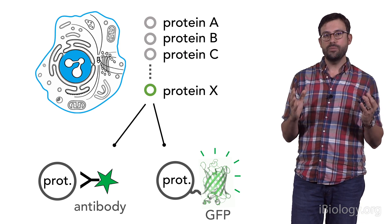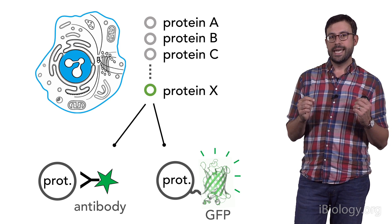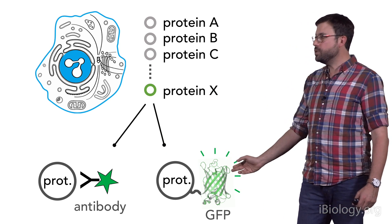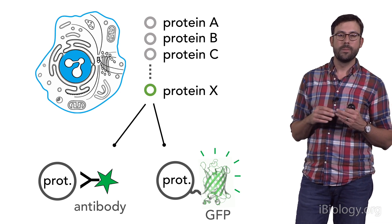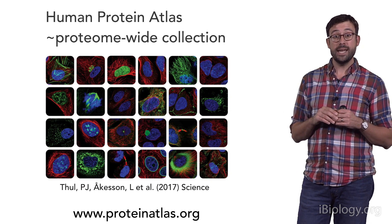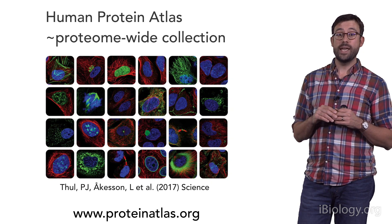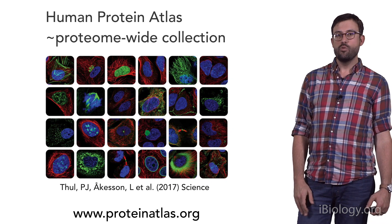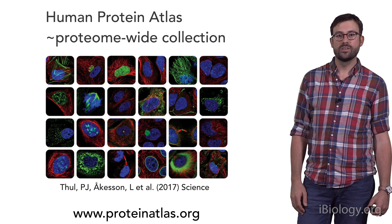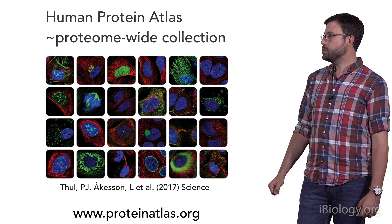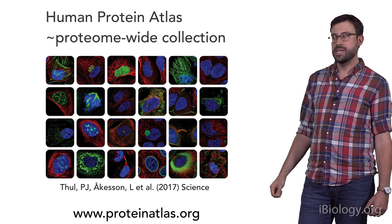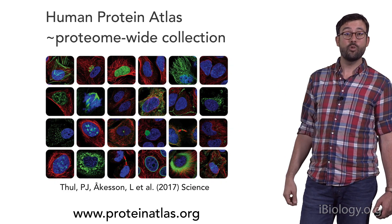Let's start with localization. Fluorescence microscopy is the key technique here. There are two main ways to localize a protein under a fluorescent microscope: immunofluorescence using labeled antibodies, or fusing a protein with fluorescent proteins such as GFP. Antibody-based methods are the most advanced. The best example is the Human Protein Atlas Project, which managed to raise polyclonal antibodies against the majority of human proteins. Emma Lundberg and her colleagues used this collection to map the localization of most proteins in human cell lines, classifying localization between 30 different cellular structures.